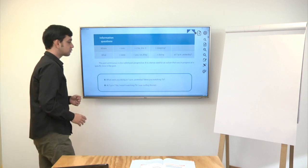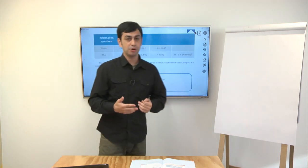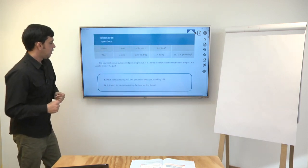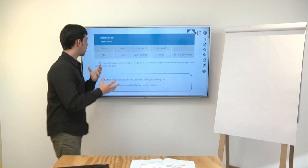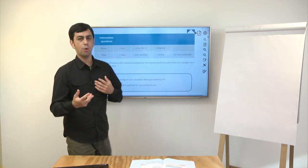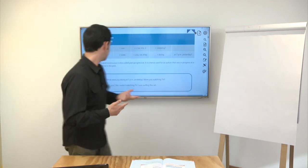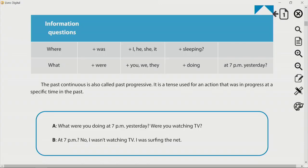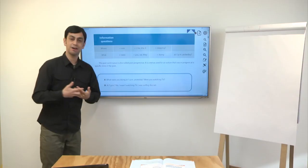Agora, pra perguntas das quais eu vou obter informações, que a resposta não vai ser sim ou não. Então, eu vou usar uma question word, que pode ser where, what, how, when, why, etc. E aí vem o meu sujeito, o verbo to be, was a were, sujeito, e aí o verbo com ing no final e o complemento. Primeiro exemplo. Where was he sleeping? Onde ele estava dormindo? What were you doing at 7pm yesterday? O que você estava fazendo ontem, às 7 da noite?